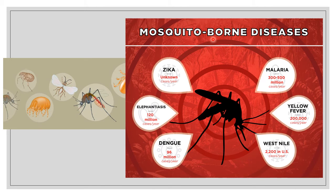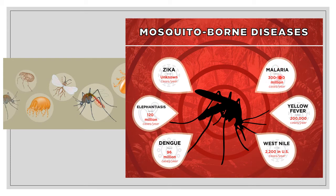This is called a vector-borne disease. For example, the mosquito is the carrier of diseases such as malaria, yellow fever, West Nile, dengue, elephantiasis, and Zika. For example, malaria is caused by a protozoa — the mosquito releases the protozoa into the human bloodstream, and that is why malaria is caused.